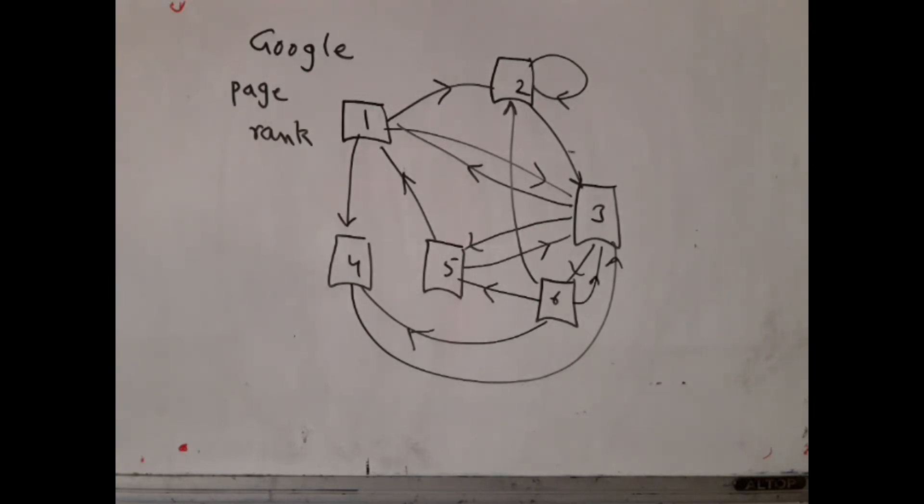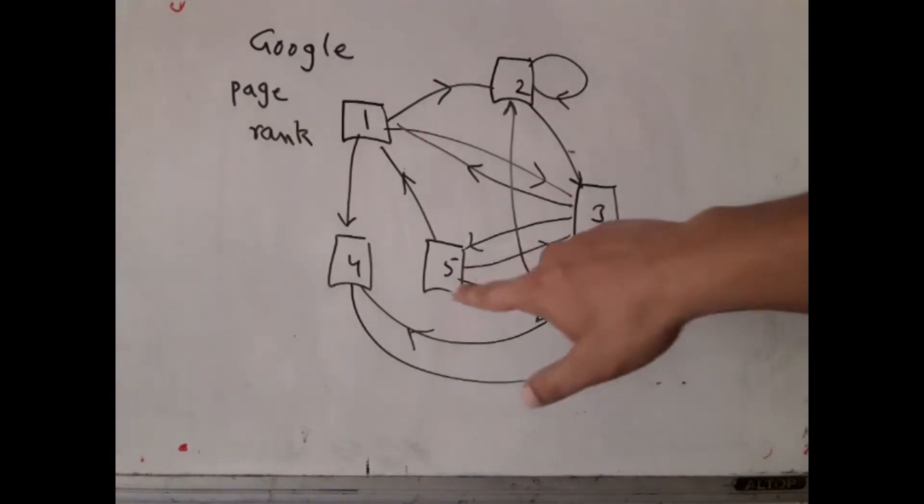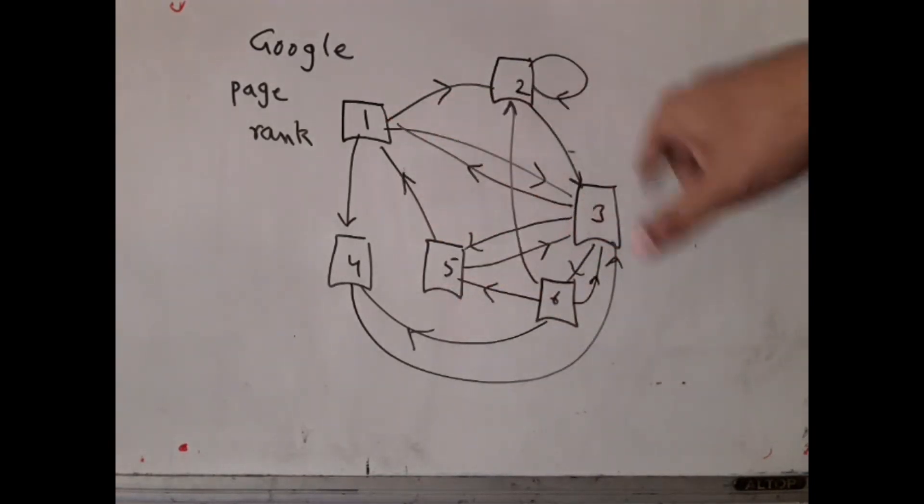Now, this ordering is based on various things, various considerations, including commercial considerations, etc. But the basic idea, at least when Google started out, that was the basic idea, that the important pages should come first and the less important ones should come next. Now, how do you decide about what is important and what is not? So here is a little sample internet. So these are the different websites or webpages and these arrows give you the links. For example, 2 links to 3, 3 will link to 5, 5 links back to 3. And in this way, the internet is a huge connected diagram.